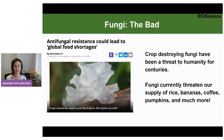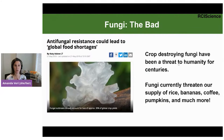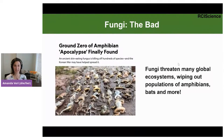Now of course we have to talk about the bad. Crop-destroying fungi have been a threat to humanity for centuries. Currently, fungi are threatening our supply of rice, bananas, coffee, and recently I read about how they're even destroying pumpkin supplies this Halloween. This is really serious because so much of our population relies on these and other crops for food. It's not only crops — fungi are also threatening many global ecosystems by wiping out populations of amphibians and much more.